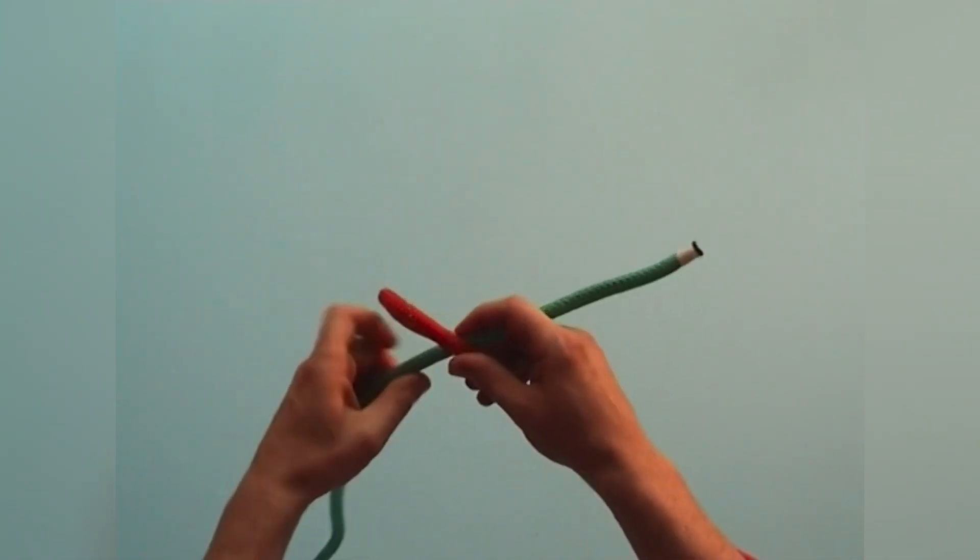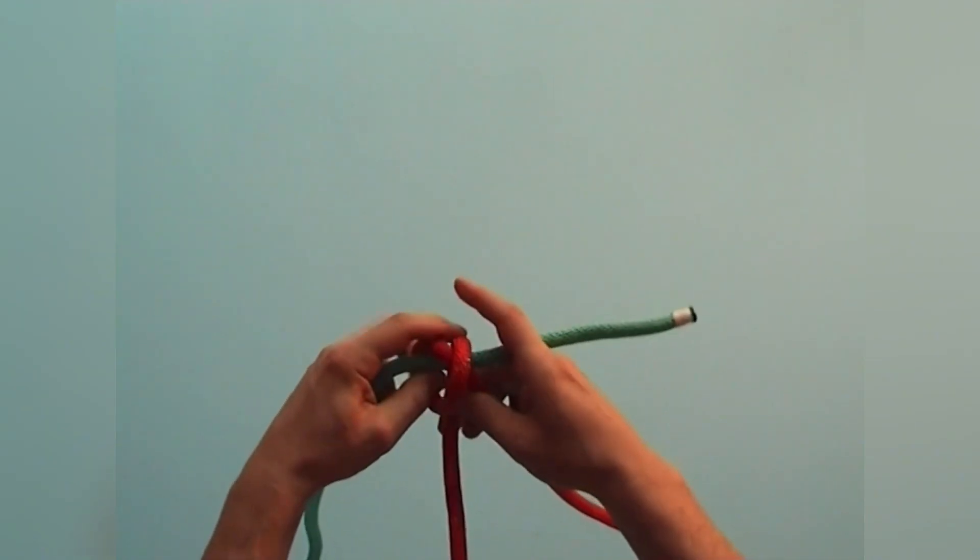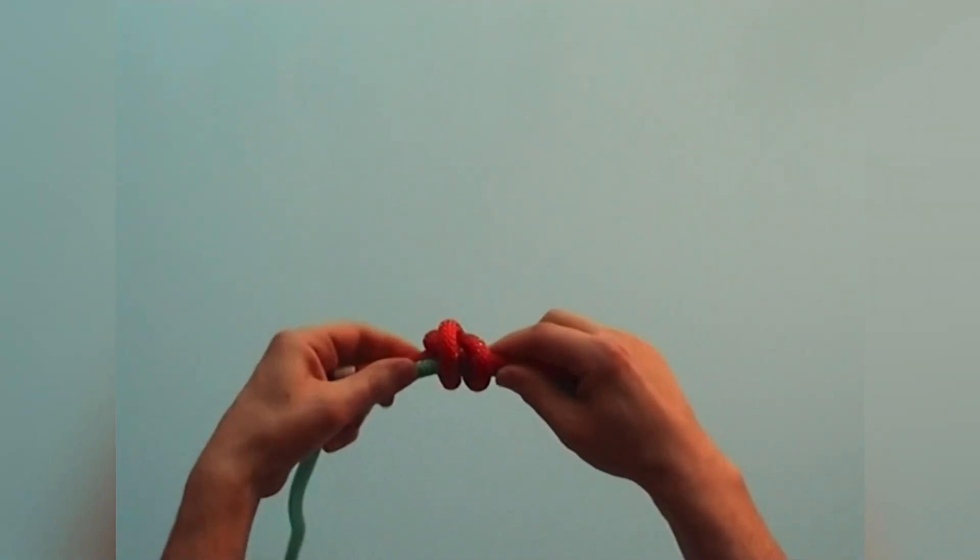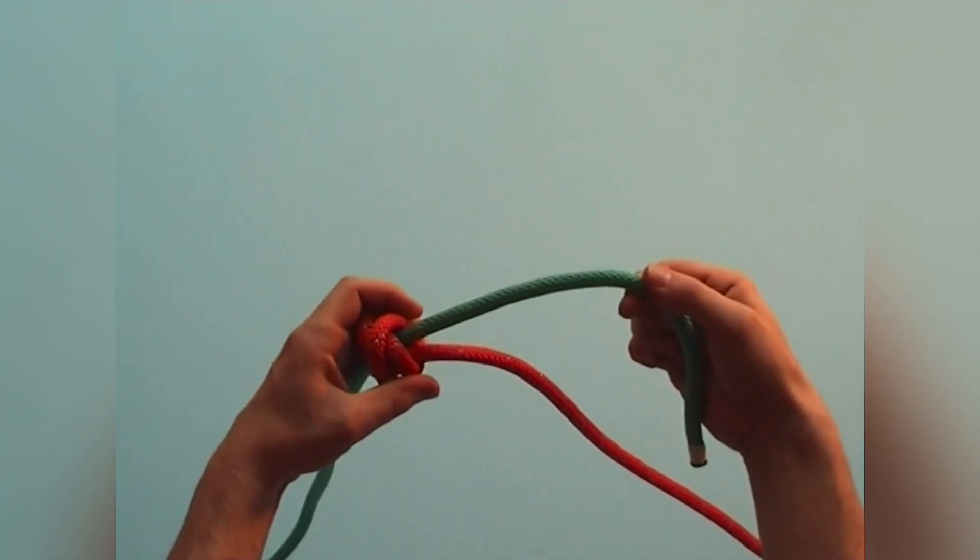First, I make a scaffold knot with this end around the other rope, and then with the other end.